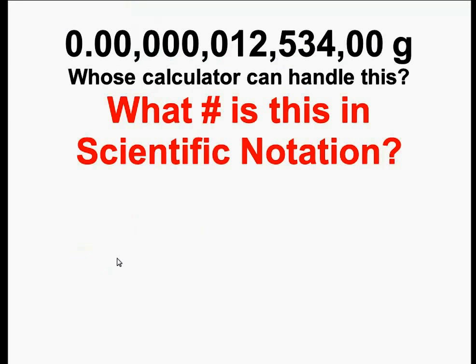That last example was a very big number. This is a very small number — a number that goes out way into the decimal places. This is, once again, hard for someone's calculator to handle, hard to express. We're going to change that by using scientific notation.